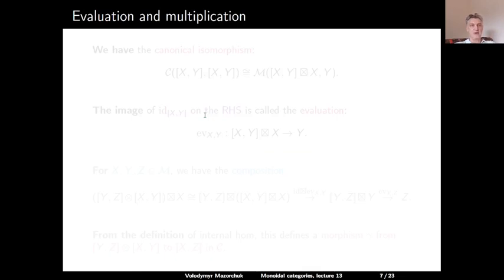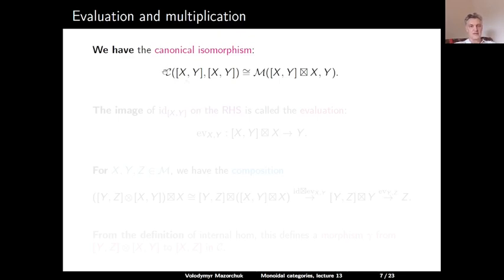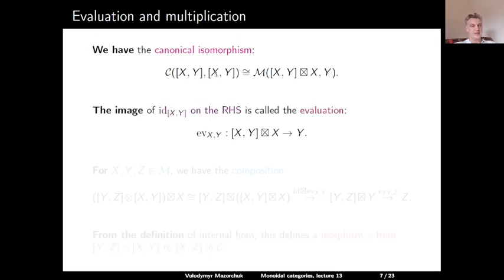Next let us define evaluation and multiplication. We have a canonical isomorphism given by our adjunction: the hom space in C from [X, Y] to itself is isomorphic to the hom space in M from [X, Y]·X to Y. We can take the identity on the left-hand side and move it to the right-hand side; its image is called the evaluation map — a morphism in M from [X, Y]·X to Y.